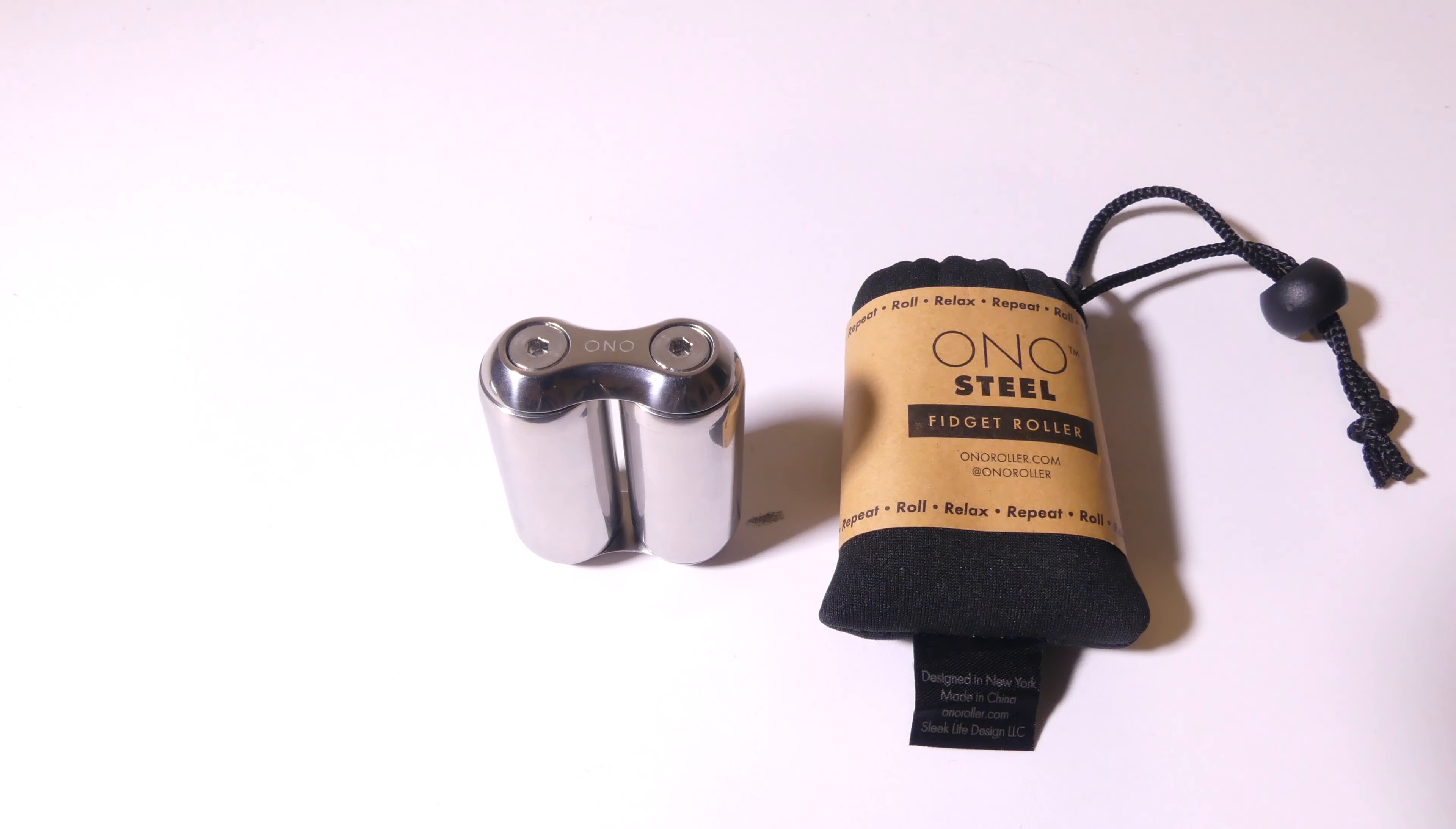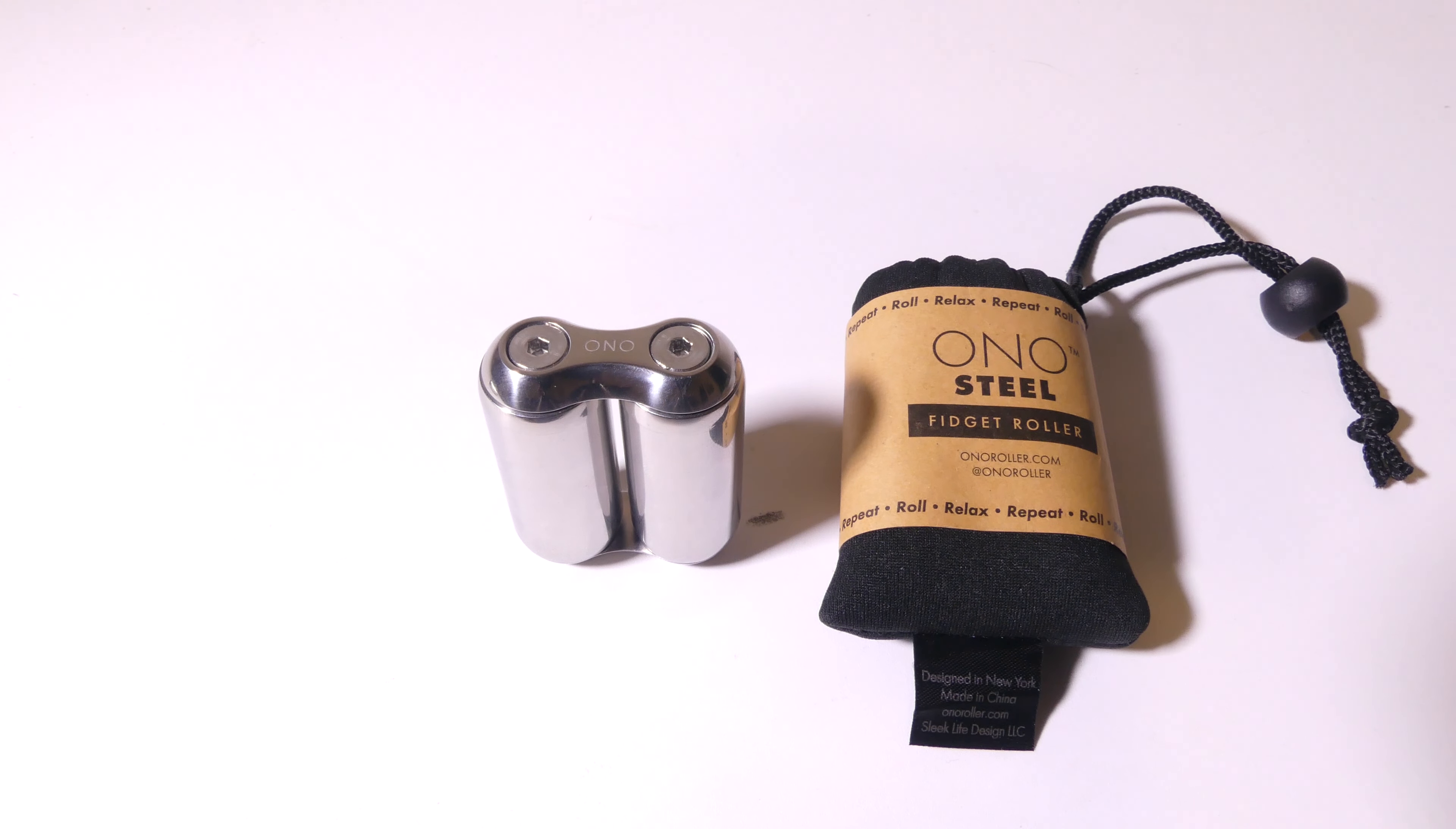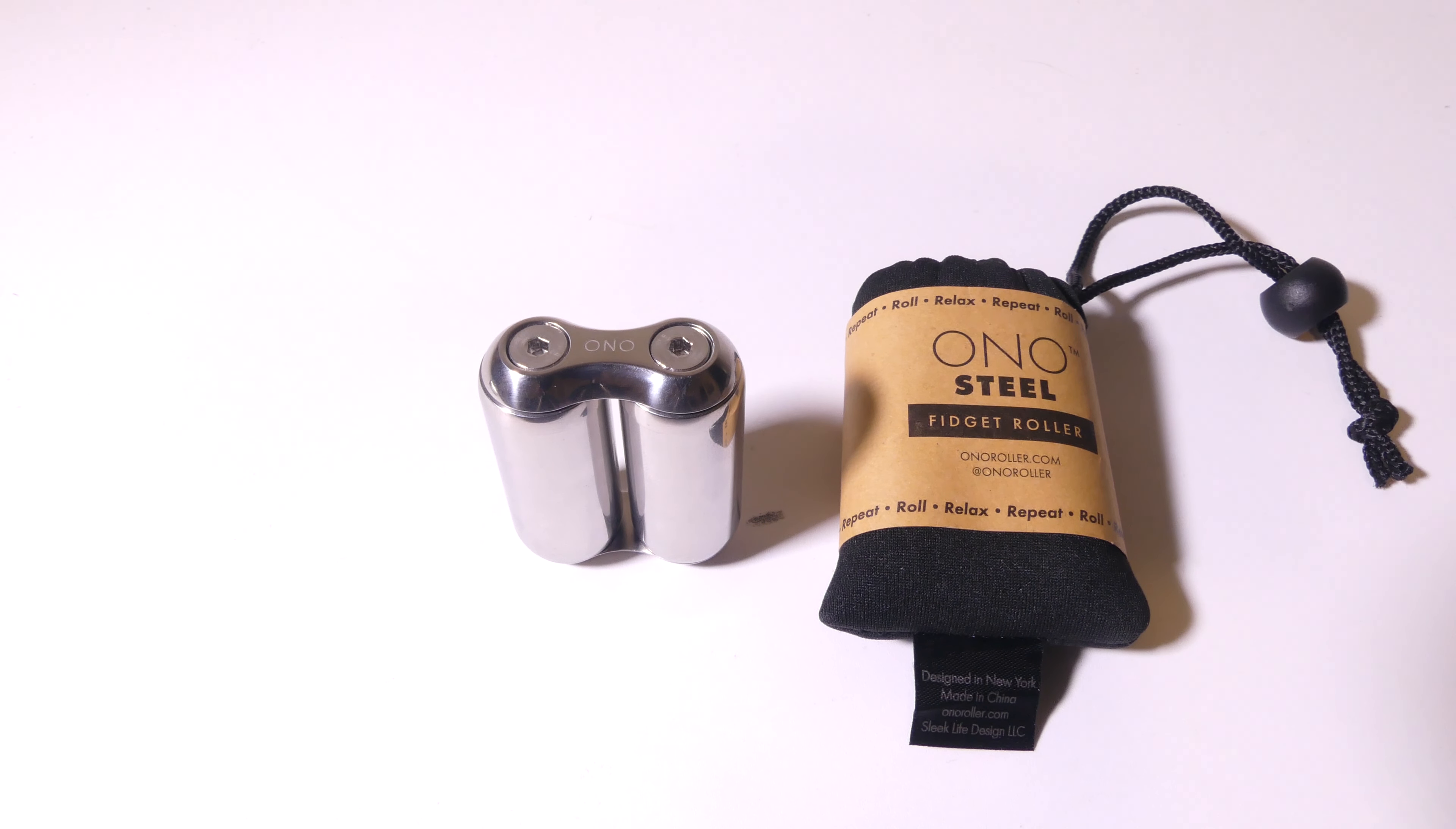So, again, it really comes down to the material that you like, the anodized aluminum or the steel, the stainless steel. You've got a bunch of different options with the Ono rollers.